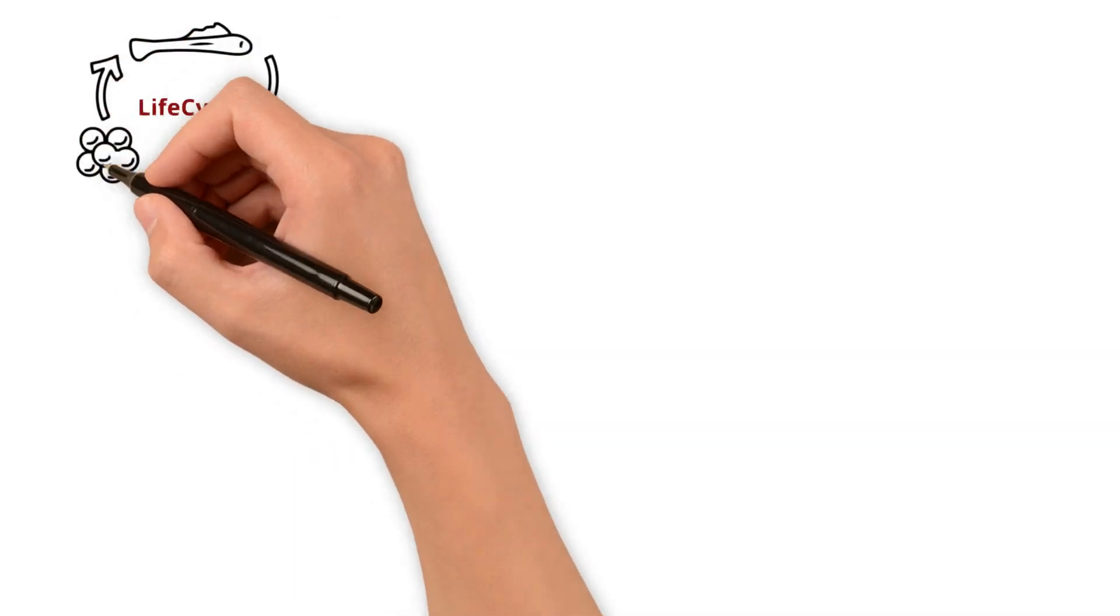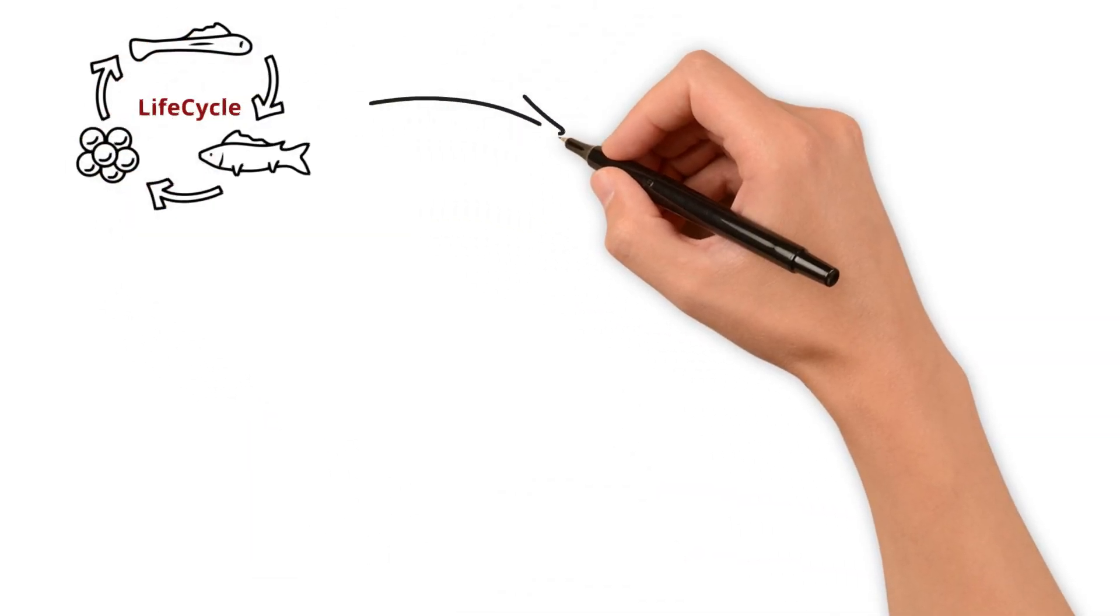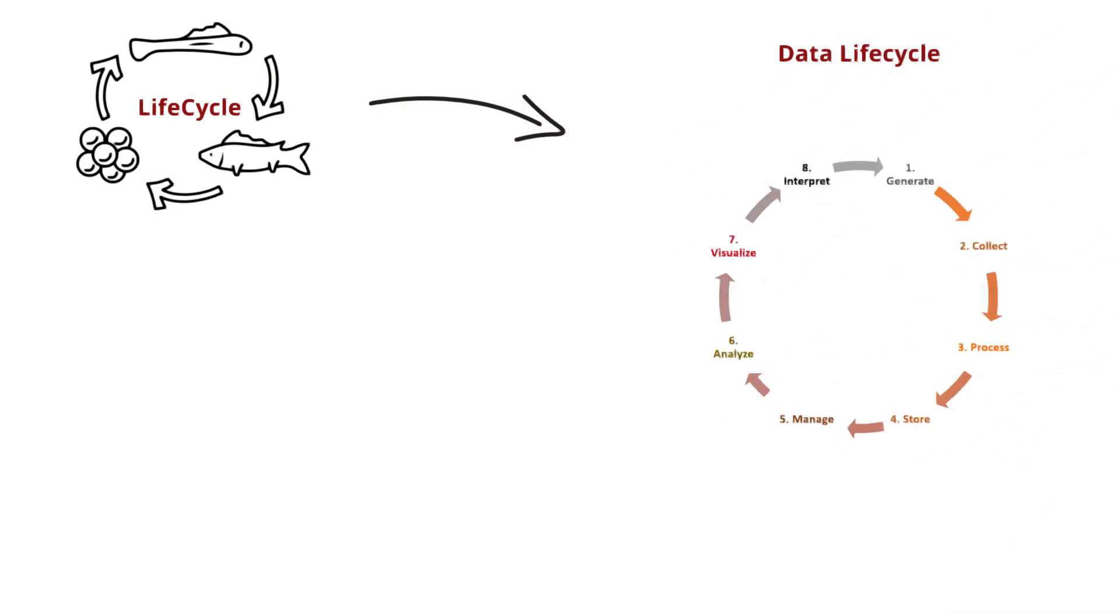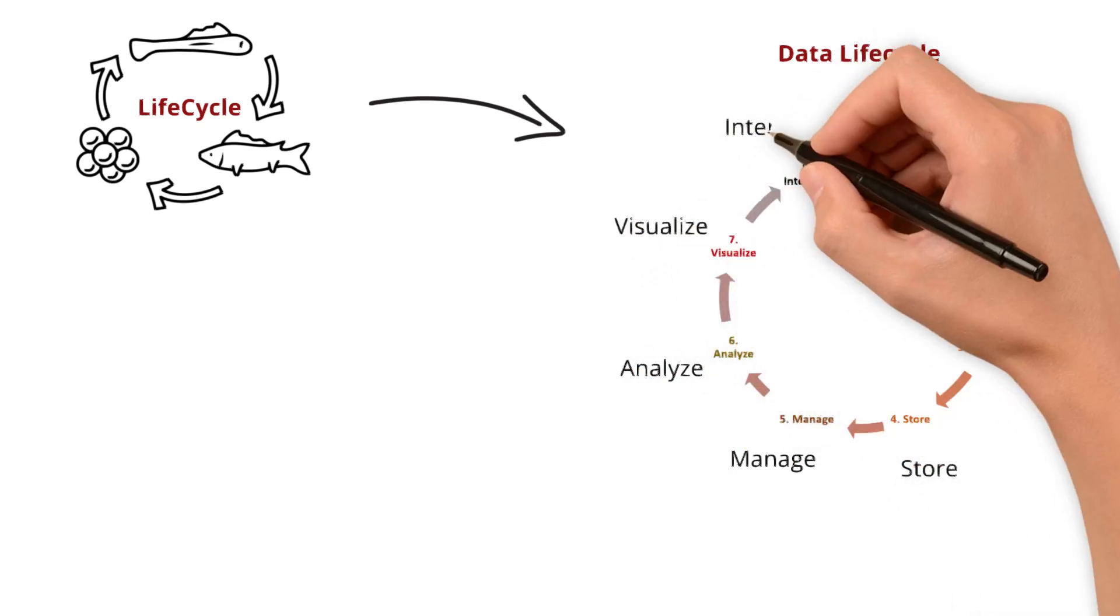Like how processes follow a lifecycle in every other system, data undergoes an evolution through multiple stages. What are those stages? Generate, collect, process, store, manage, analyze, visualize, and interpret.